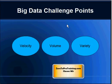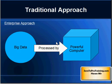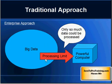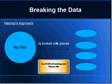In the traditional enterprise approach, a company gets a very powerful computer and feeds in all available data for it to crunch the numbers. This computer will do a good job, but only up to a certain point. Eventually it will not be able to handle the processing anymore because this approach is not scalable, and big data keeps growing. So the traditional enterprise approach has its limitations when it comes to big data.